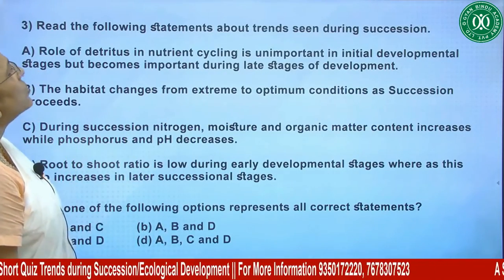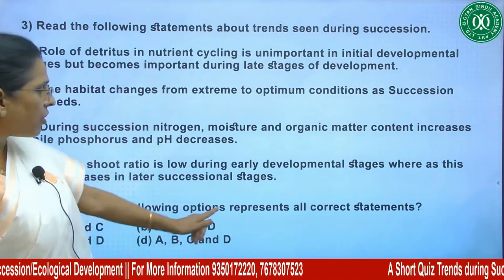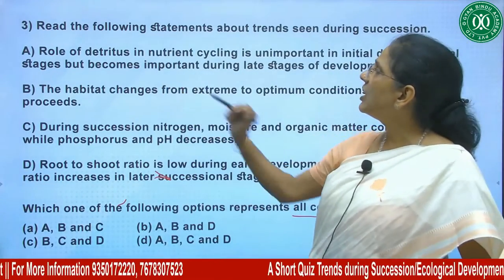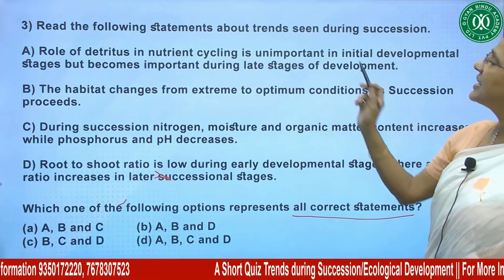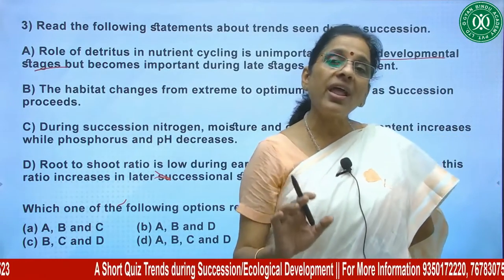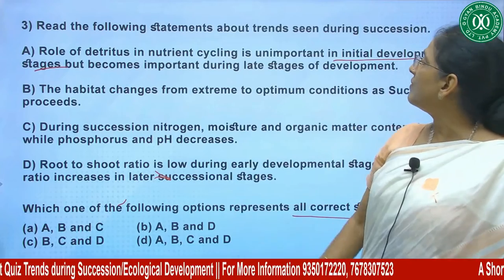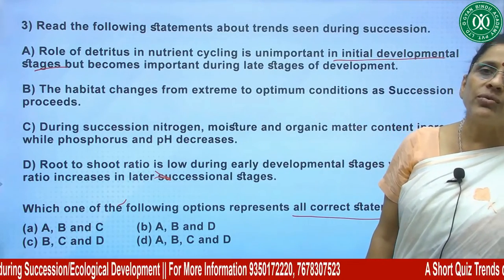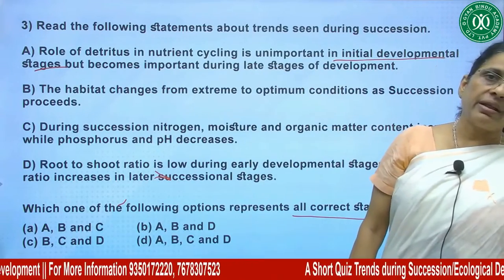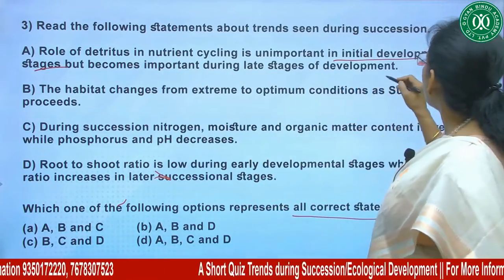Coming to another question about trends seen during succession. First statement: the role of detritus in nutrient cycling is unimportant in initial developmental stages but becomes important during later stages of development. This is true — in early stages detritus is almost absent, so the food chain is grazing-type rather than detritus-type. So this statement is correct.